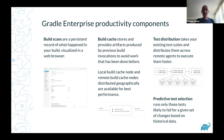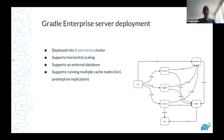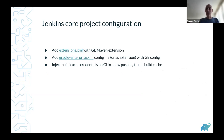You can conditionally turn predictive test selection on or off — for a release build you always want to run all tests, but for a pull request you run only those likely affected by the change. The server is deployed into a Kubernetes cluster, supports horizontal scaling, and runs at some of the biggest software engineering teams in the world — Netflix, LinkedIn, and others including banks — with thousands of users. You can use an external database instead of the embedded one, and run multiple cache nodes for people on different continents with automatic replication.